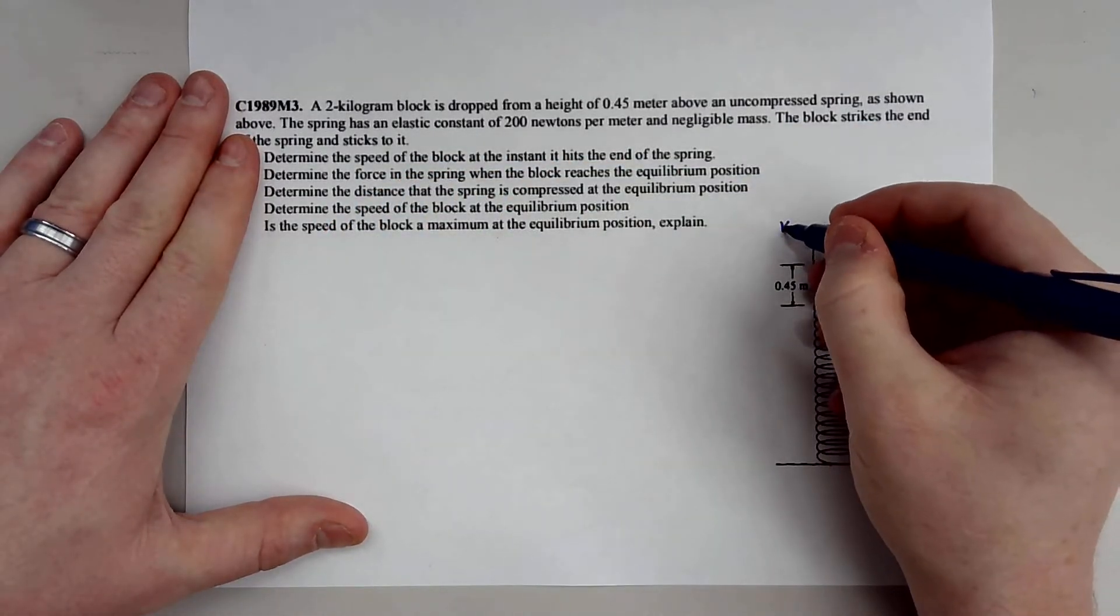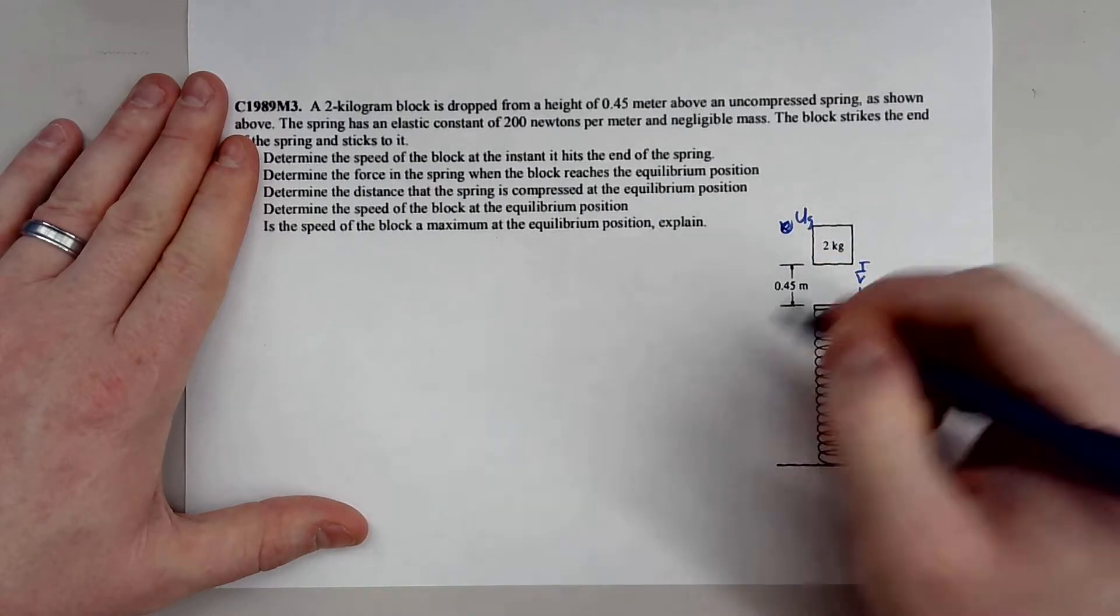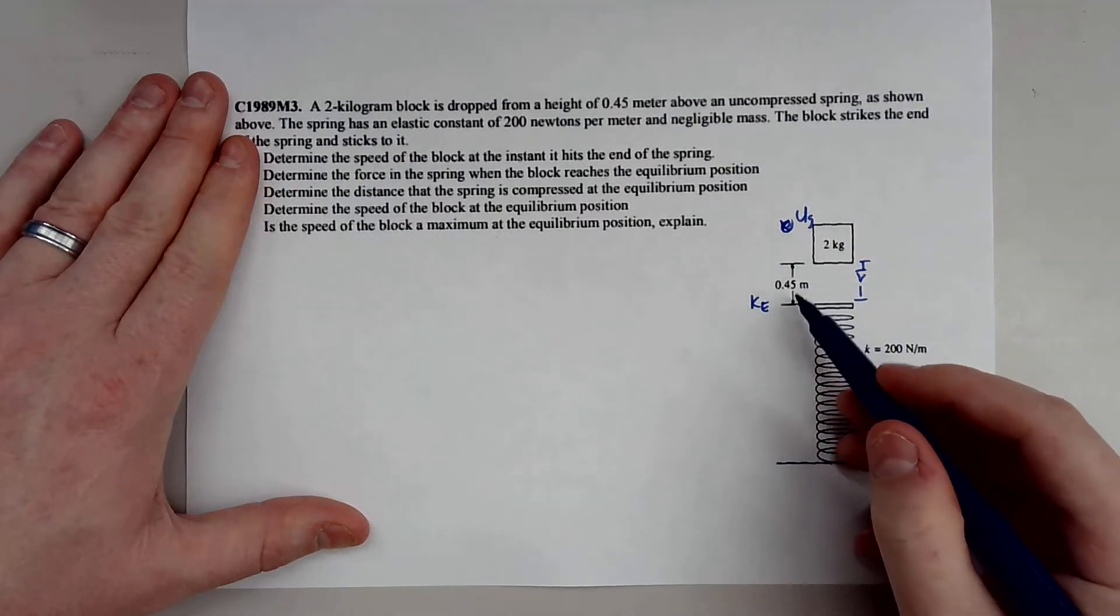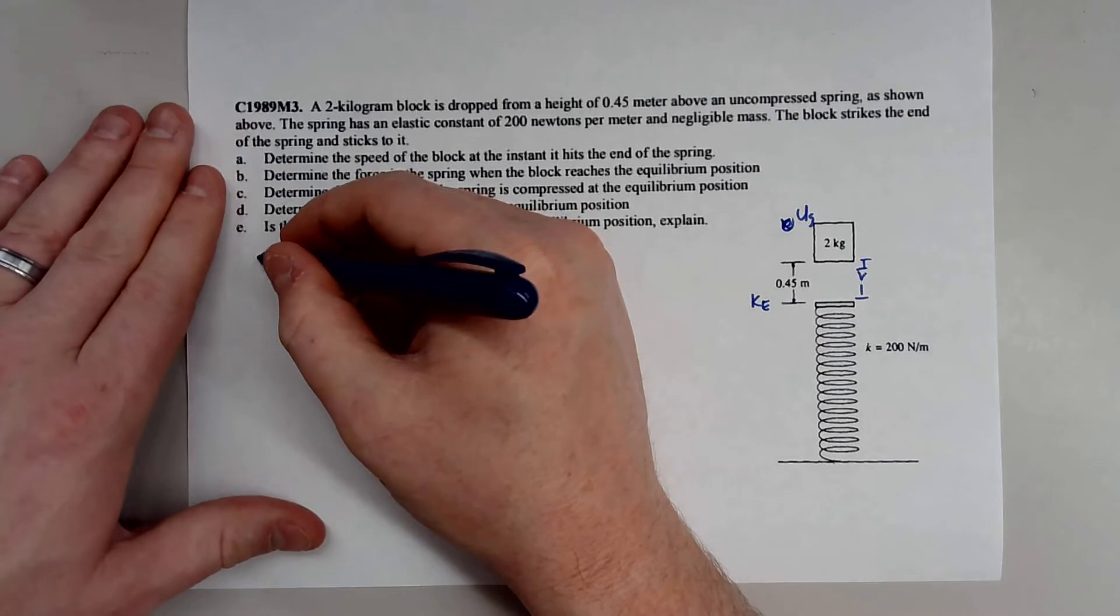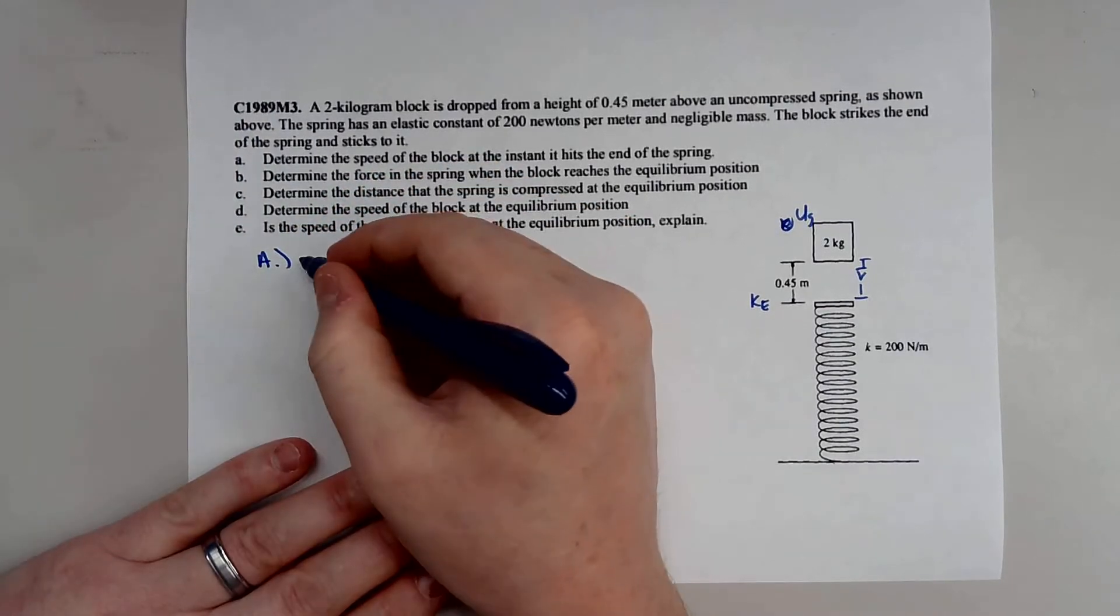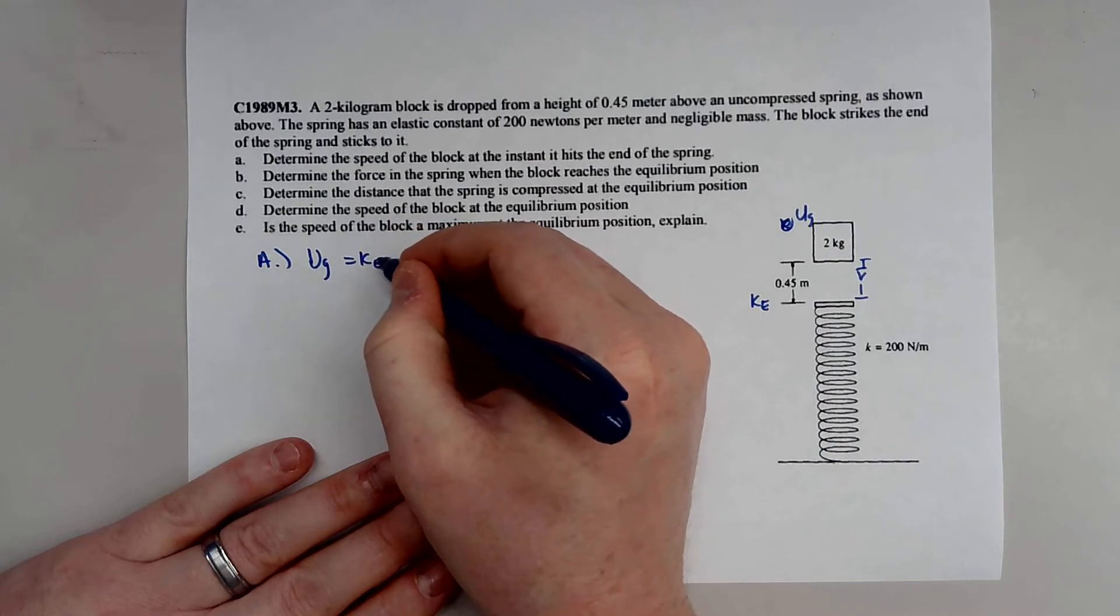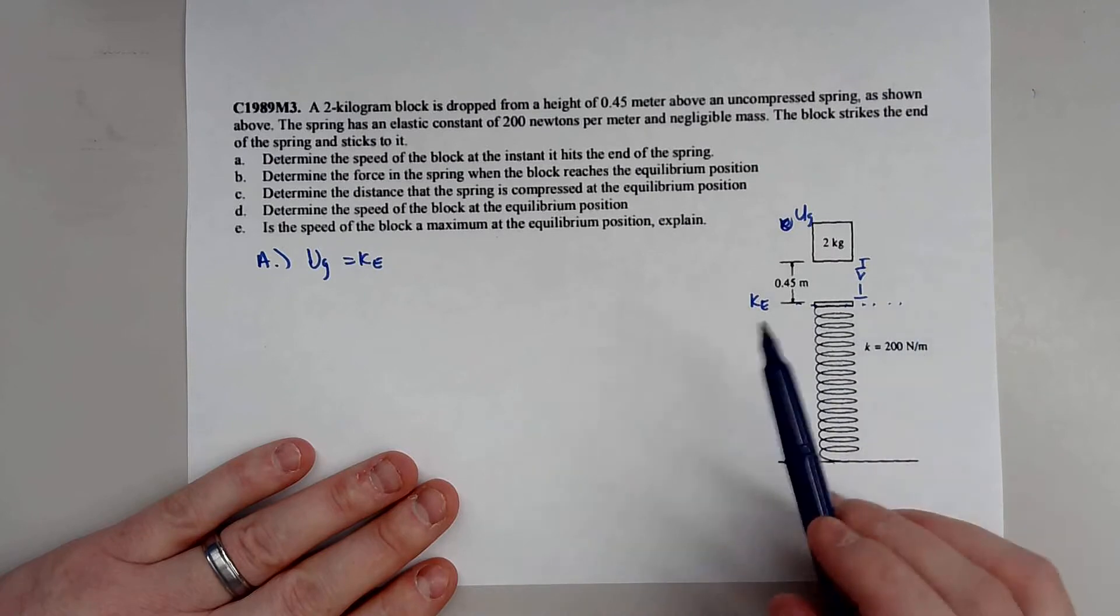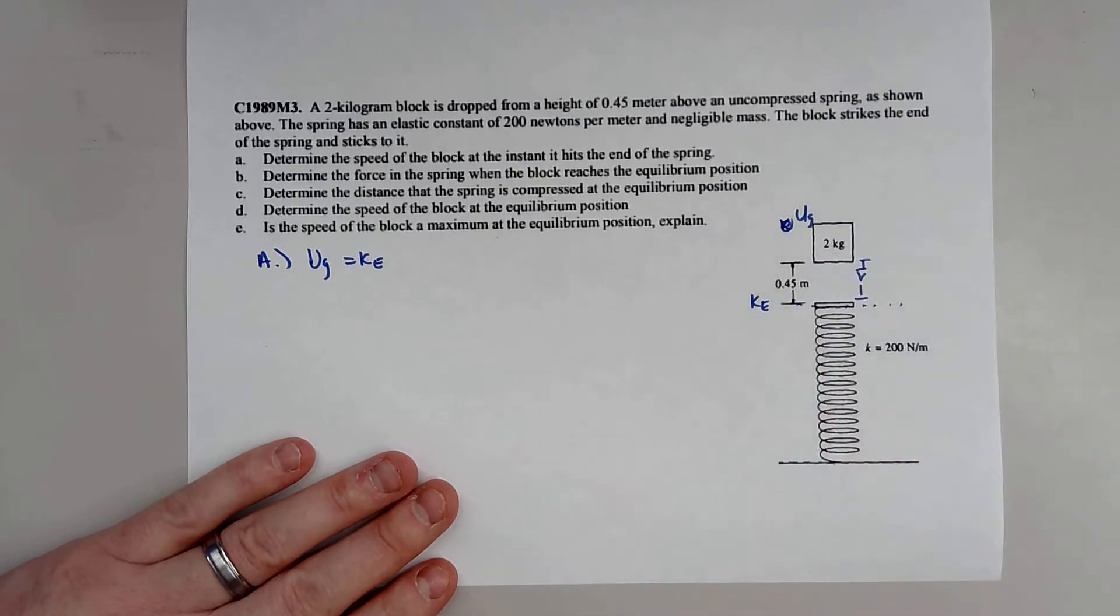Well, obviously we know this block has potential energy at the very top and as it falls, it gains kinetic. So if I know the vertical displacement that it falls, I can find out how much kinetic energy it has. So for Part A, simply all I have to do is set my potential equal to kinetic. Because the block only has kinetic energy, I'm stating that this is the zero spot. So pretty much just how fast will this block be going in 0.45 meters.